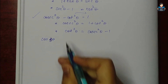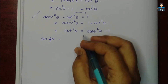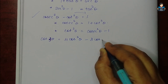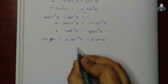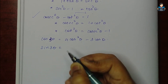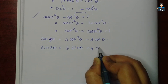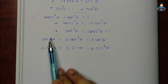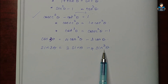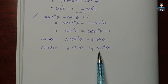Next we have the triple angle formulas: cos3θ and sin3θ. The formula for cos3θ is 4cos³θ - 3cosθ. The formula for sin3θ is 3sinθ - 4sin³θ. Notice that both have the coefficient 4 and involve the cube term.